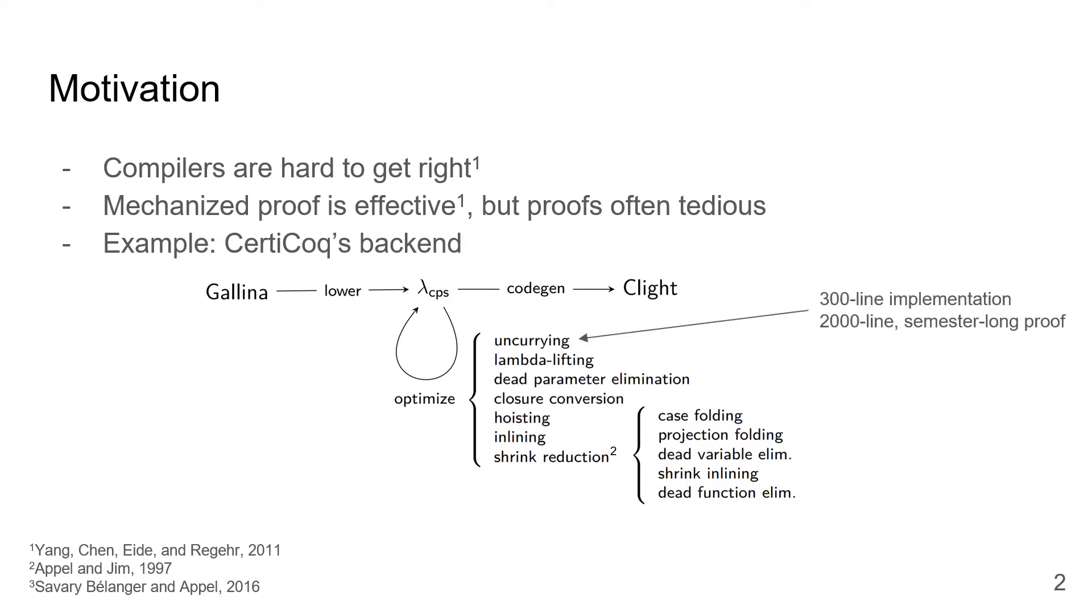For example, this uncurrying pass is implemented in 300 lines of pretty straightforward Coq code, and then took me the better part of a semester and 2,000 lines of Coq tactics to prove correct. As another example, this shrink reduction pass was first invented and used in 1997, but wasn't proved correct, not even on paper, until 2016.